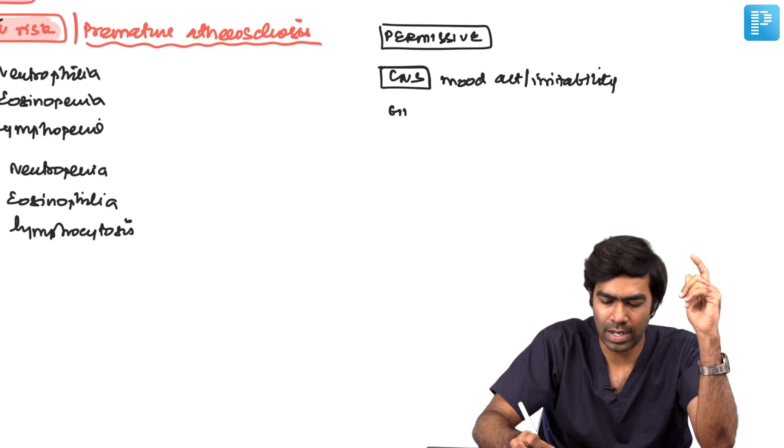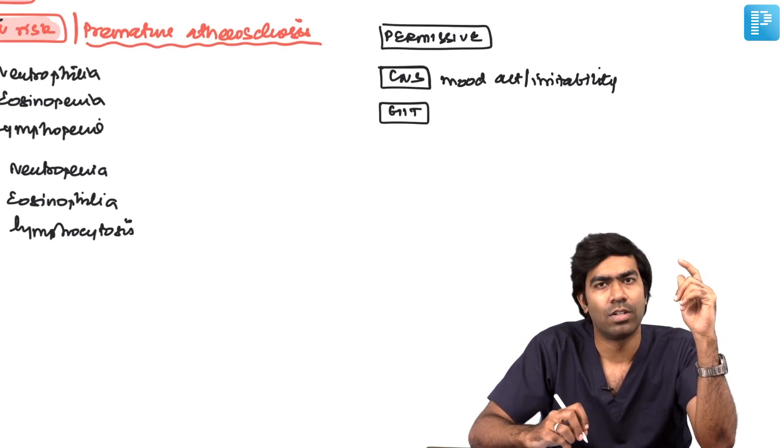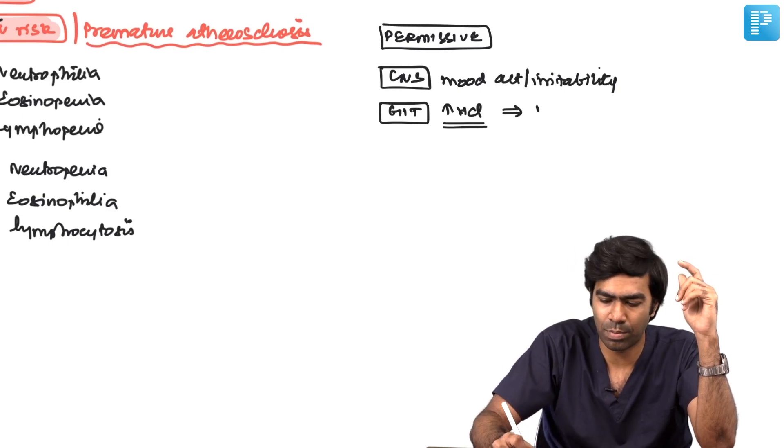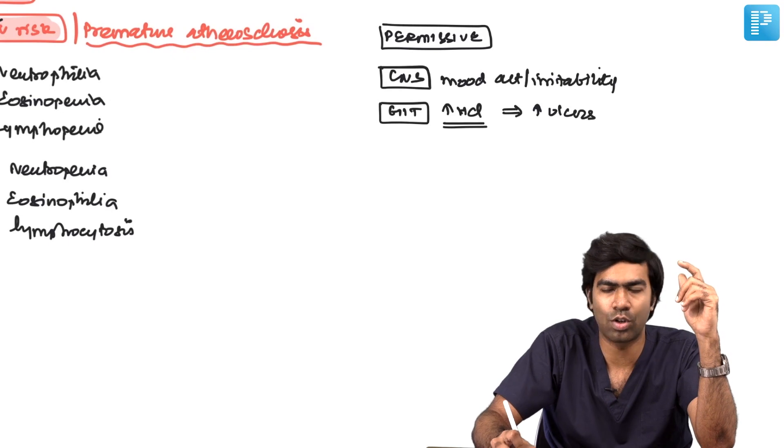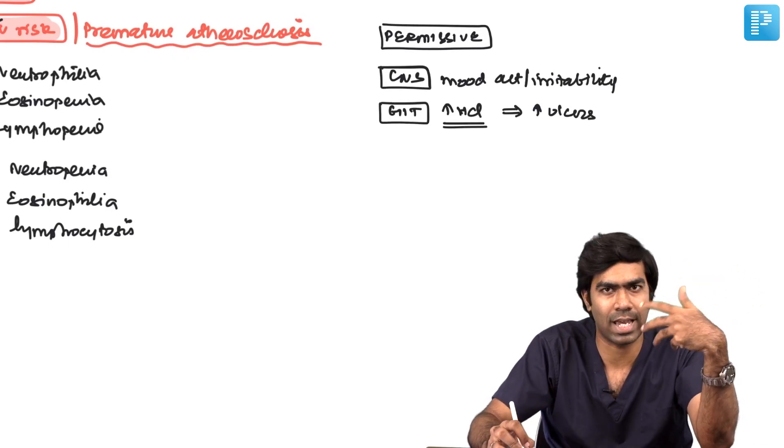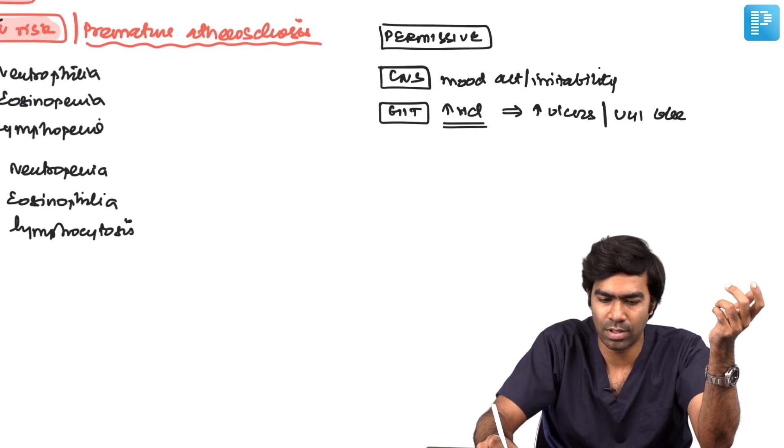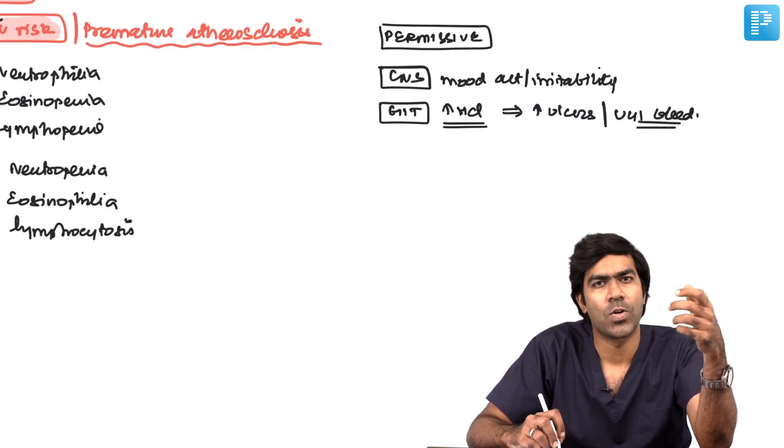In the gastrointestinal tract, they produce increased acid secretion, making patients prone for ulcers. That is why glucocorticoid therapy is associated with gastric or duodenal ulcers, which can even produce upper gastrointestinal bleeding.